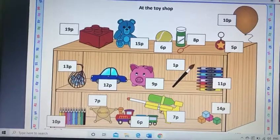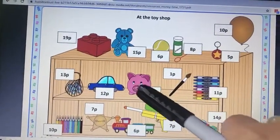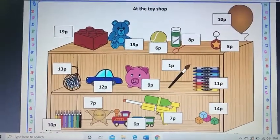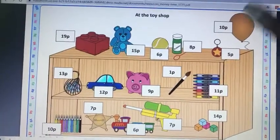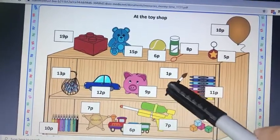So the first thing I would like to buy is a piggy bank. So this piggy bank in the middle and the second thing I would like to buy I think is a paintbrush. So I've got a piggy bank for 9p and a paintbrush for 1p.